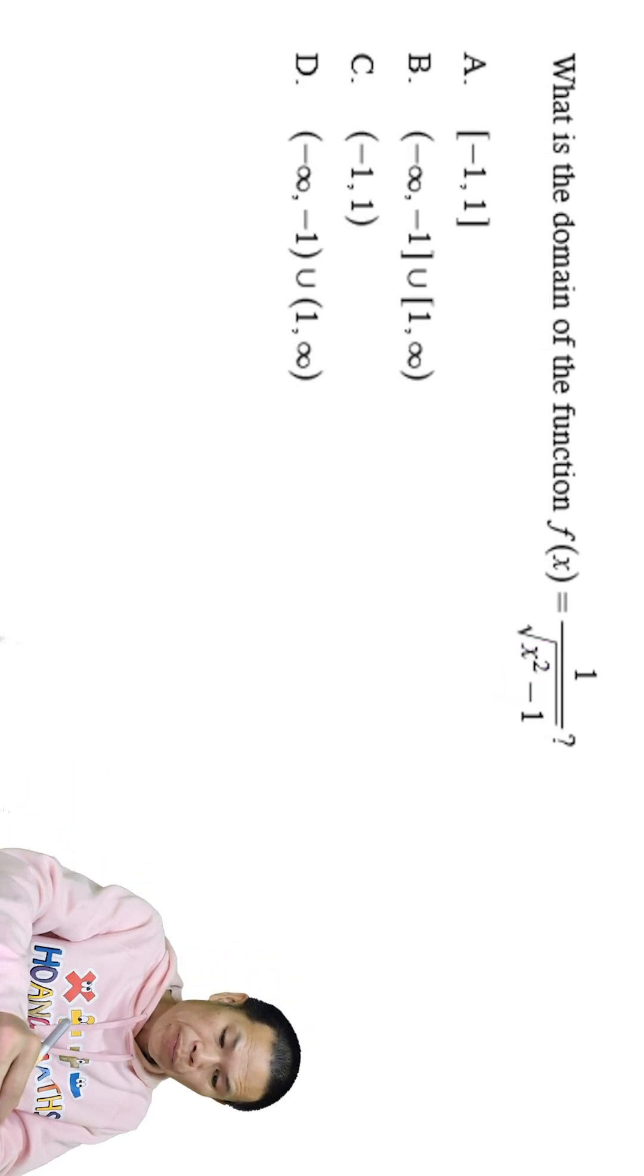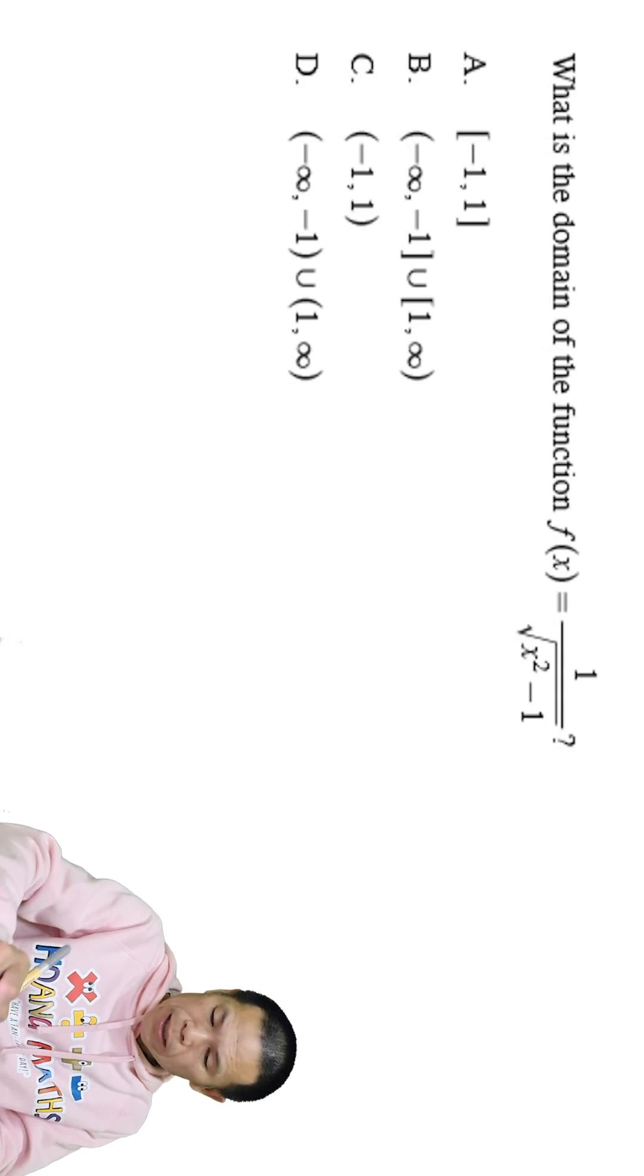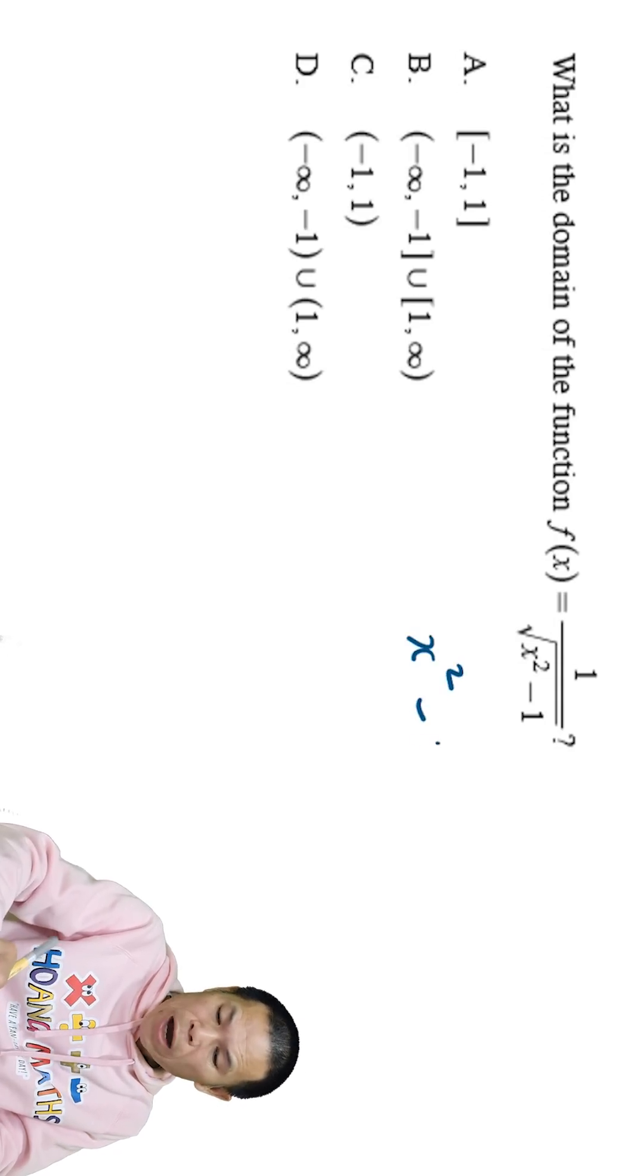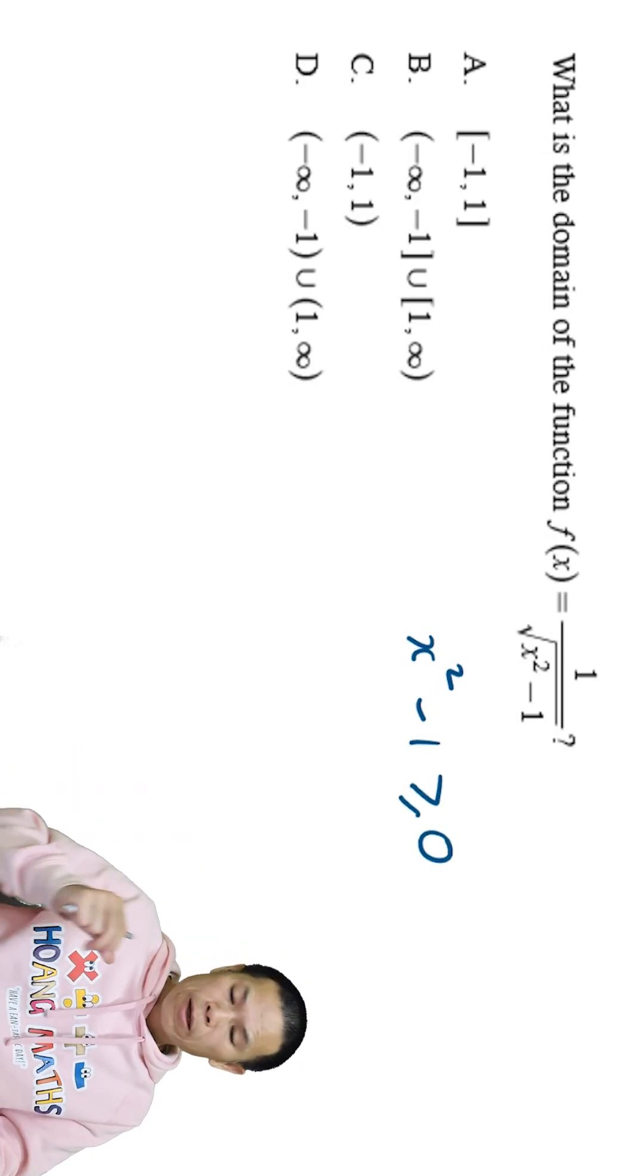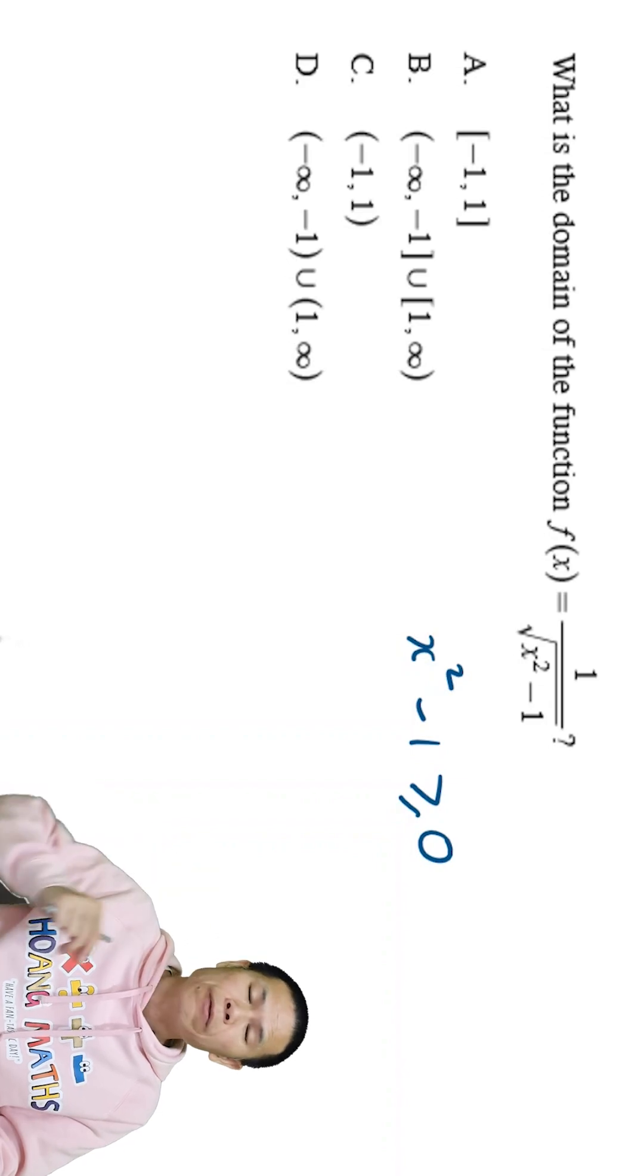So let me just write this down. That means x squared minus 1 must be greater or equal to zero because we can square root a zero, right? But we cannot square root a negative number.